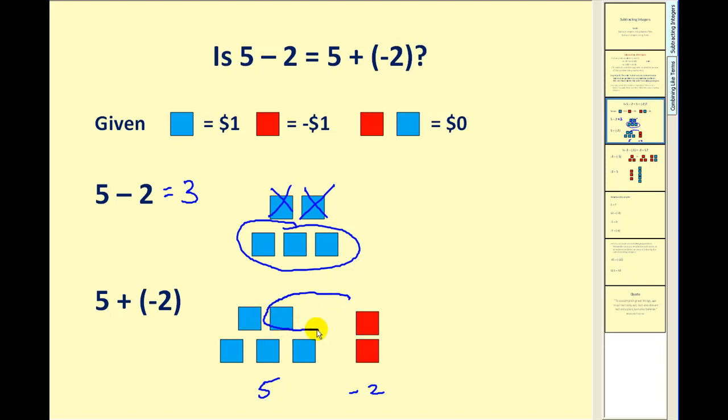we know that a positive $1 and negative $1, that would give us 0. Here's another positive $1 and negative $1, and that would give us 0. So again, what remains as we see here, we have $3 or positive 3. 5 plus negative 2 also gives us the result of $3.